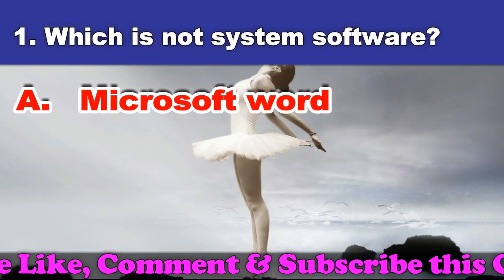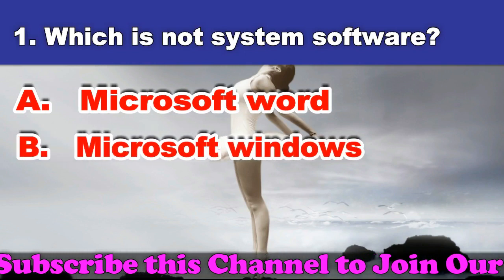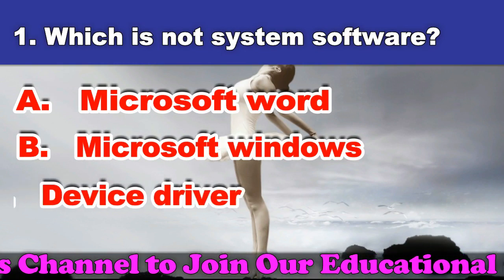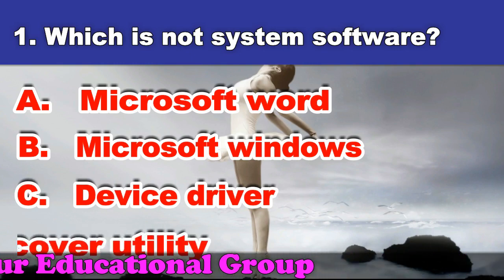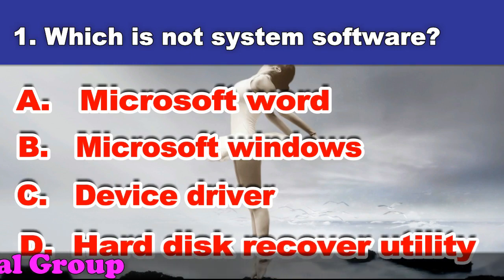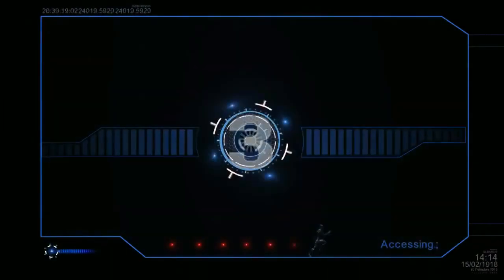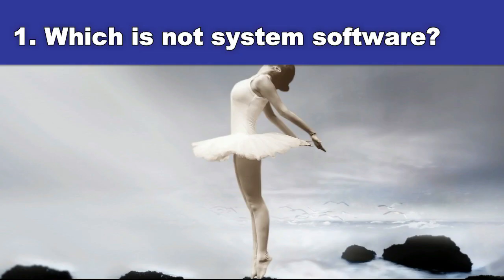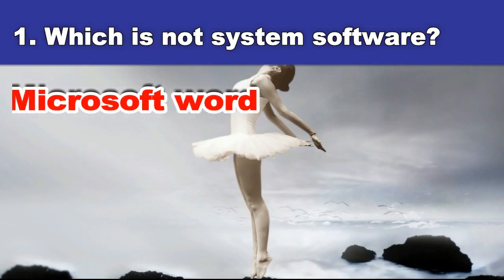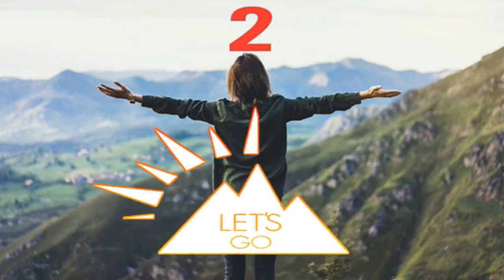First question: Which is not system software? A. Microsoft Word. B. Microsoft Windows. C. Device driver. D. Hard disk recovery utility. And the answer is Microsoft Word.